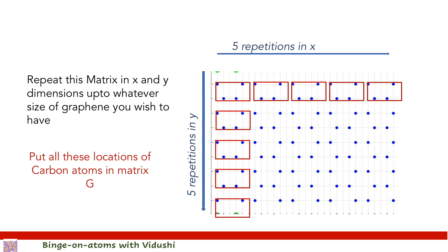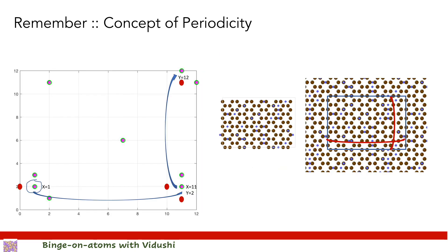To get a full-fledged graphene matrix, I extended this small unit five times in x and five times in y to get the structure shown here. This way we get the locations of carbon atoms in this mesh, which I saved in matrix G. You can increase the number of repetitions in the code. Most importantly, while creating the graphene primary lattice, remember the concept of periodicity — you need to add two additional rows and columns and reciprocate atoms at one end to the other to ensure neighboring atoms remain in their place.